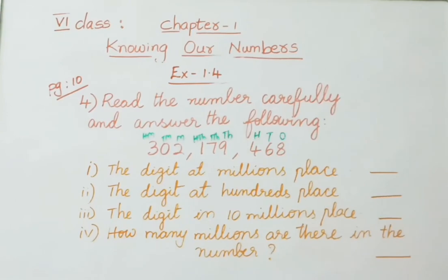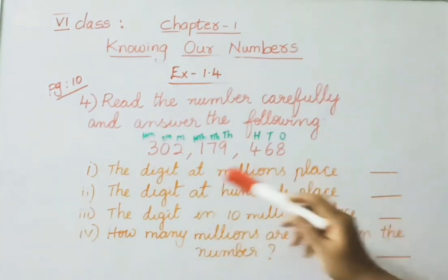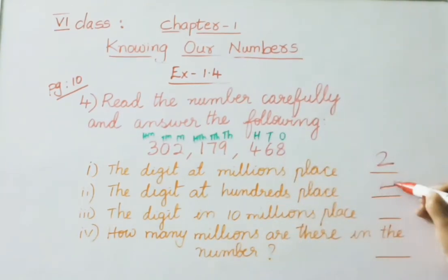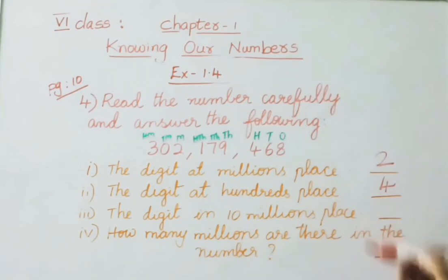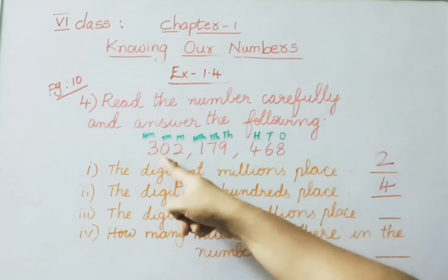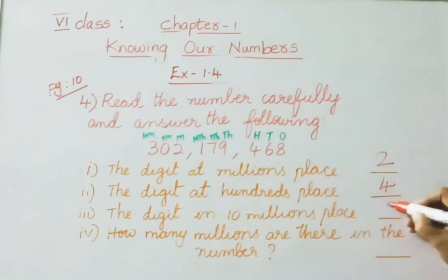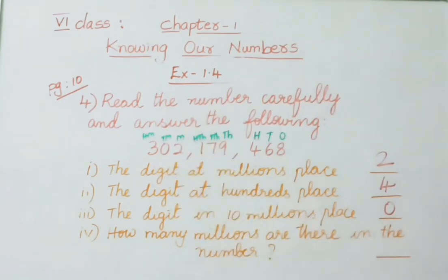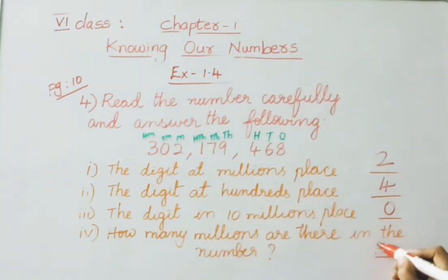First question: what is the digit at the millions place? Answer: 2. Second: what is the digit at the hundreds place? Answer: 4. Third: the digit in the ten millions place? Answer: 0. Fourth: how many millions are there in the number? There are 302 million, so the answer is 302.